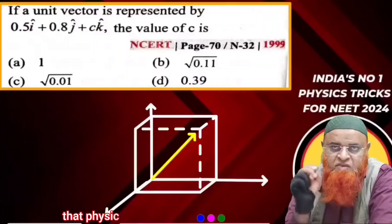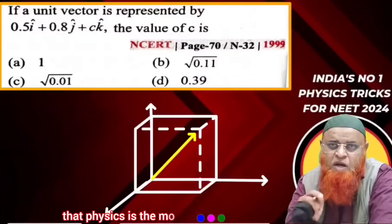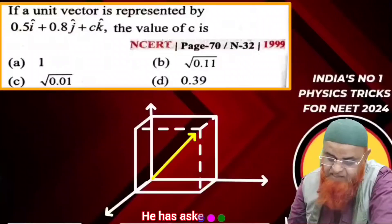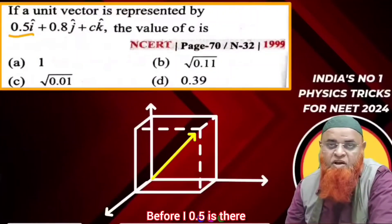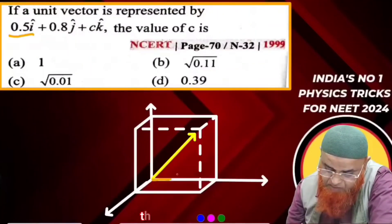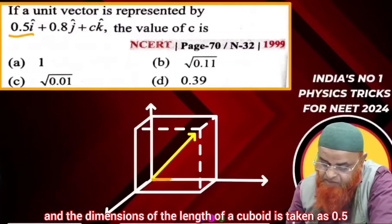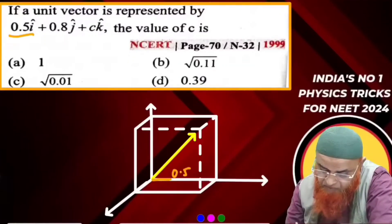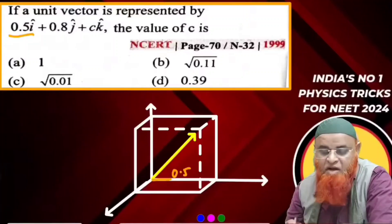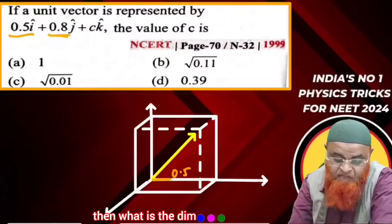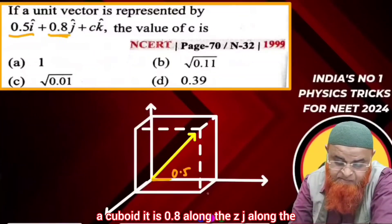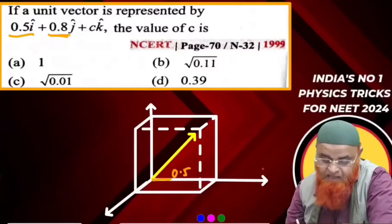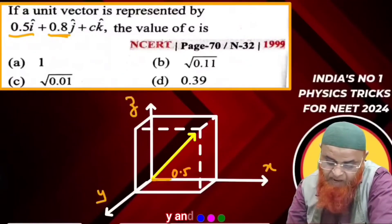My dear students, I would like to prove that physics is the most easiest subject in this world — that is my mission. In this question, it is said that before i, 0.5 is there. This is a unit vector and the dimension of the length of a cuboid is taken as 0.5. The breadth of the cuboid is 0.8 along the y-axis.